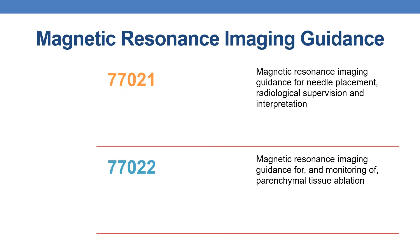Coming to magnetic resonance imaging guidance, there are two CPTs: 77021 and 77022. CPT 77021 describes magnetic resonance imaging guidance for needle placement, radiological supervision, and interpretation. CPT 77022 describes magnetic resonance imaging guidance for and monitoring of parenchymal tissue ablation. With this, we complete the guidance topic in radiology. Thank you for watching. Please subscribe for further videos on medical coding and CPC training.